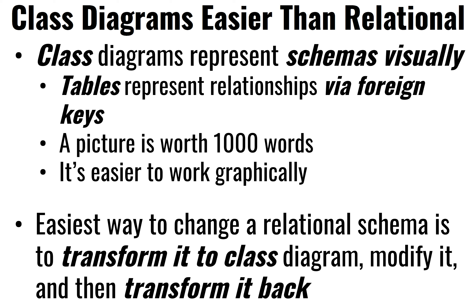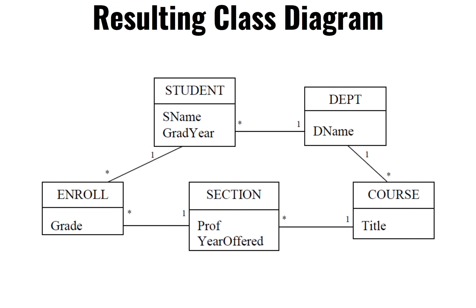And oftentimes it's very convenient to represent it at this very high level, since it's easy to think and reason from a class diagram — a graphical representation — rather than a representation in code in Java, JSON, XML, or relational schemas. Because it's very hard to reason through the representation at such a low level, it's very often useful to bring it up to this representation, make your changes here, and then transform back to your low level representation.